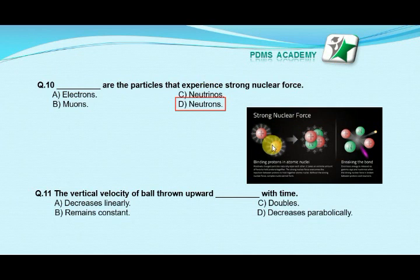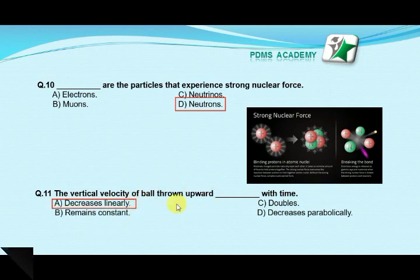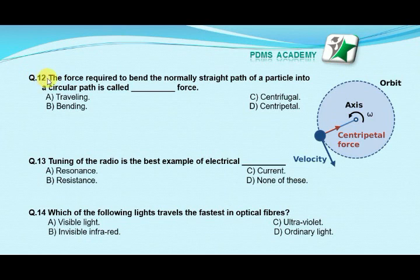Our next MCQ is: the vertical velocity of a ball thrown upward changes with time as — option A: decreases linearly, option B: remains constant, option C: doubles, option D: decreases parabolically. Our correct answer is A: decreases linearly. The velocity of a ball thrown upward decreases linearly with time.